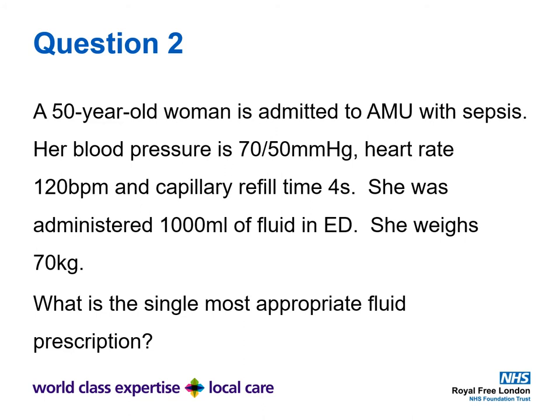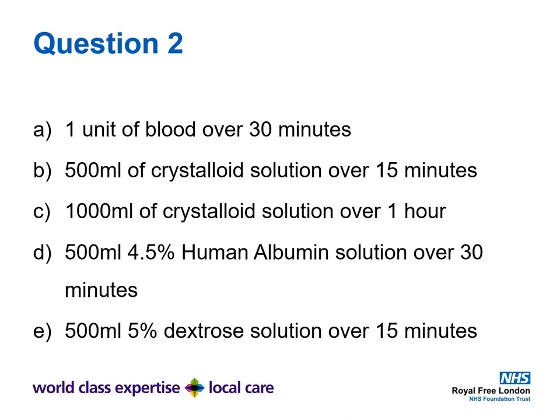Question two. A 50-year-old woman is admitted to the acute medicine unit with sepsis. Her blood pressure is 70/50, heart rate is 120, and capillary refill time is four seconds. She was administered 1000 mls of fluid in the emergency department and weighs 70 kilos. What is the single most appropriate fluid prescription? Is it A) one unit of blood over 30 minutes, B) 500 mls of crystalloid solution over 15 minutes, C) 1000 mls of crystalloid solution over one hour, D) 500 mls of 4.5% human albumin solution over 30 minutes, or E) 500 mls of 5% dextrose over 15 minutes?